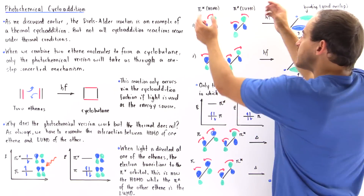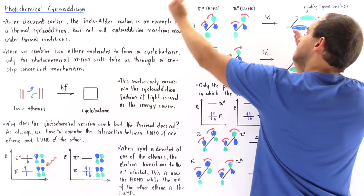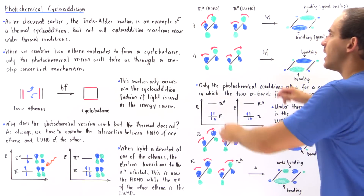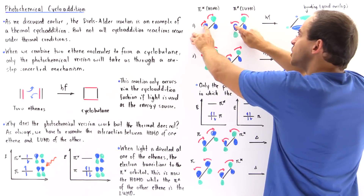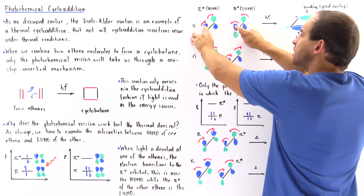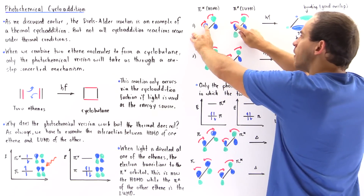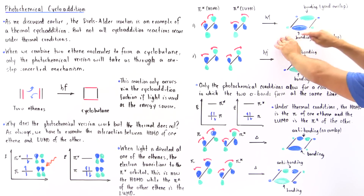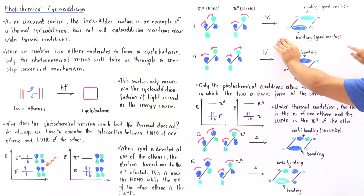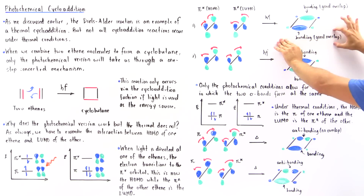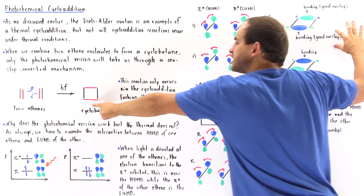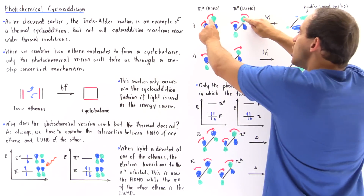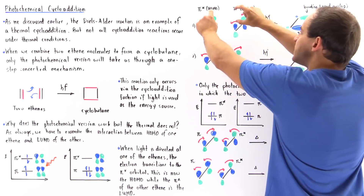If the bond rotates clockwise and this bond rotates counterclockwise, these two blue lobes — the negative sections of the wave functions — will overlap when they rotate. That will be a bonding interaction, a good overlap, and that bond will be formed.